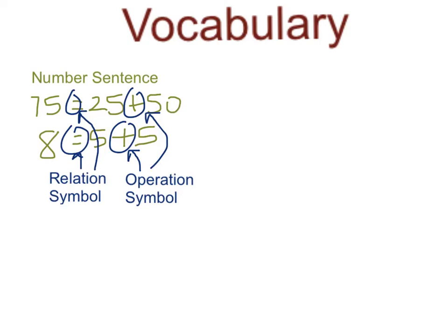Now, as I said earlier, both of these number sentences are different kinds of number sentences, and now we're going to talk about what kinds they are. The second number sentence is what's known as a true number sentence simply because it's true. 75 does equal 25 plus 50. The second number sentence is what's known as a false number sentence because it's not true. 8 does not equal 5 plus 5, so this one is a false number sentence.